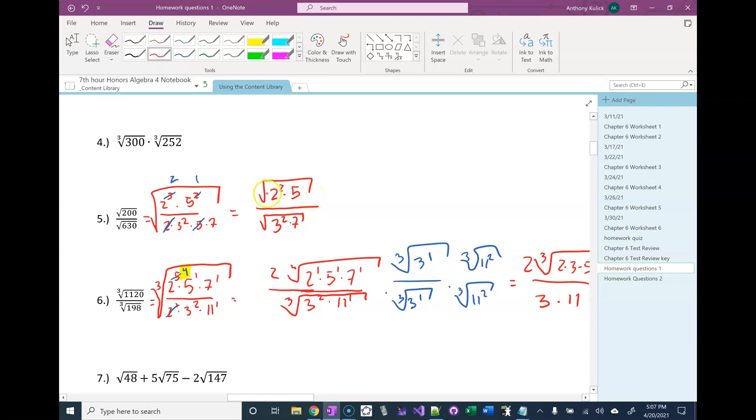So I notice that I have a 2 squared underneath my square root, so that can become just a regular 2 outside the square root. Remember the square root of 2 squared is just 2 because 2 squared is 4, the square root of 4 is 2. Same thing down here with the 3 squared - I can take that 3 squared under the radical and write it as a 3 outside the radical.